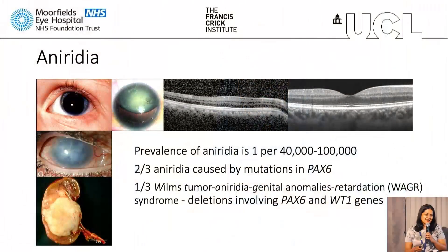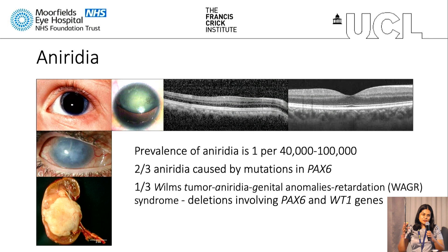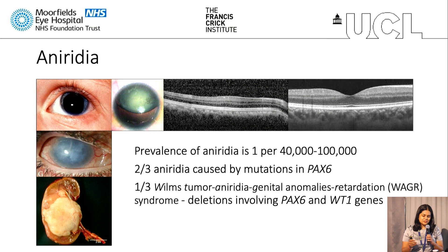The prevalence of aniridia is around 1 per 40,000 to 100,000 according to the literature. If we took all aniridia patients, two-thirds would be aniridia with PAX6 mutations, and a third generally are patients with WAGR syndrome. Patients with WAGR have deletions that affect the PAX6 and WT1 neighboring gene.